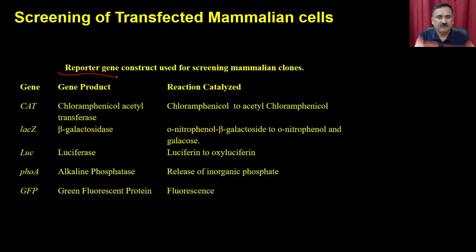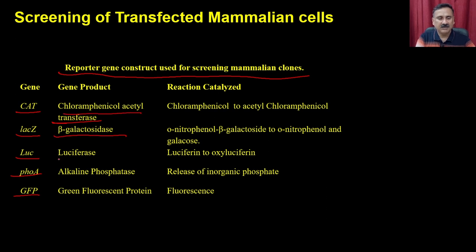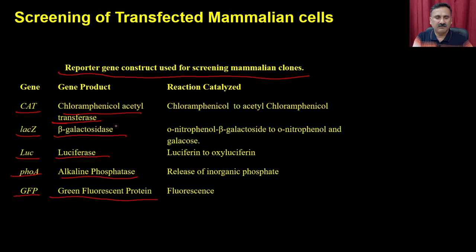The reporter gene constructs that can be used for screening mammalian clones include the CAT gene, lacZ, luciferase, SEAP (secreted alkaline phosphatase), and GFP. The gene products are chloramphenicol acetyltransferase, beta-galactosidase, luciferase, alkaline phosphatase, and green fluorescent protein. The readout can be done by fluorescence, luminescence, or UV detection.